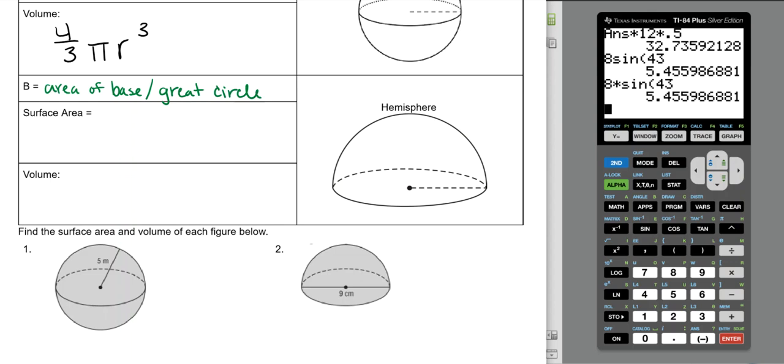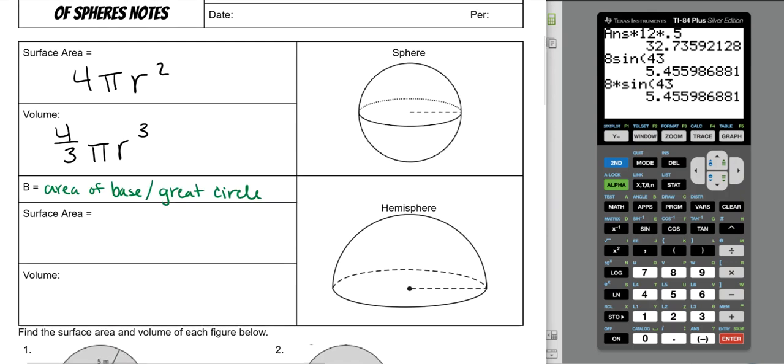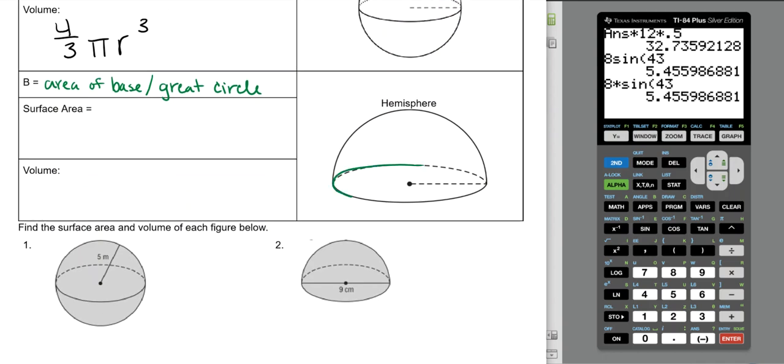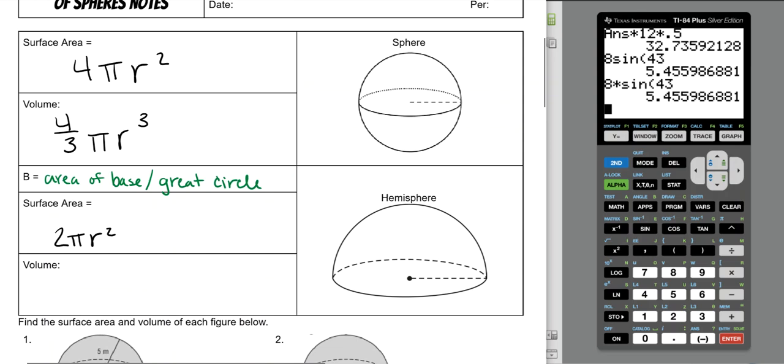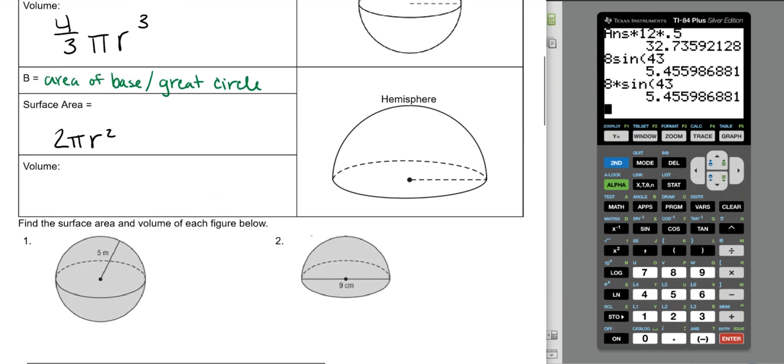All a great circle is, if you take a traditional sphere like this one, it's the widest point around. If you're thinking of the Earth, it would be the equator, the biggest part around a sphere. For a hemisphere, it's literally this bottom part here. The surface area for a hemisphere is 2πr², because this is divided by 2, but then we also have to add in that base on the bottom, because now it does have a bottom to it.